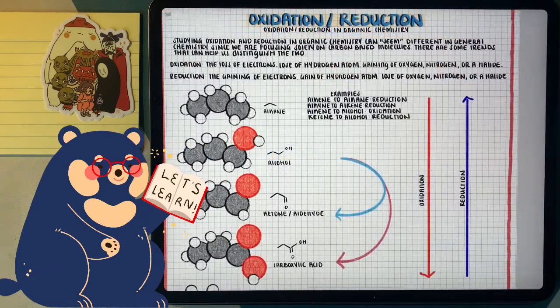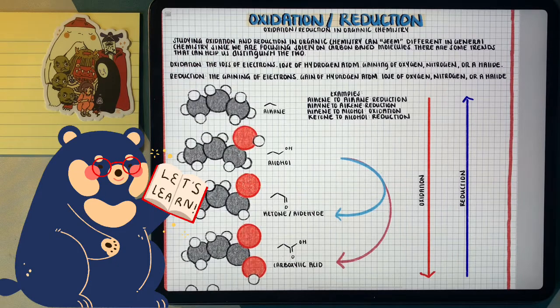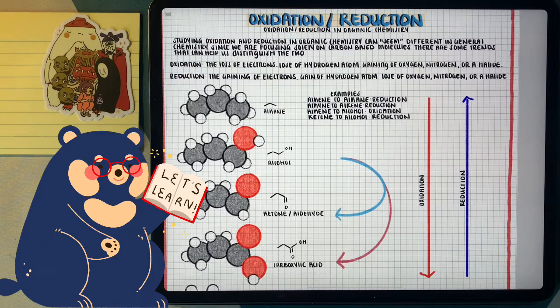In general chemistry, we learned oxidation is the loss of electrons, reduction is the gain of electrons. But when it comes to organic chemistry, we're going to put a different scope on looking at these reactions.